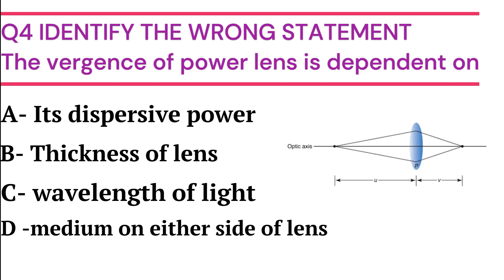Identify the wrong statement. The vergence power of a lens is dependent on: Option A - its dispersive power, Option B - thickness of lens, Option C - wavelength of light, Option D - medium on either side of lens. The vergence power of a lens is dependent on all except its dispersive power.